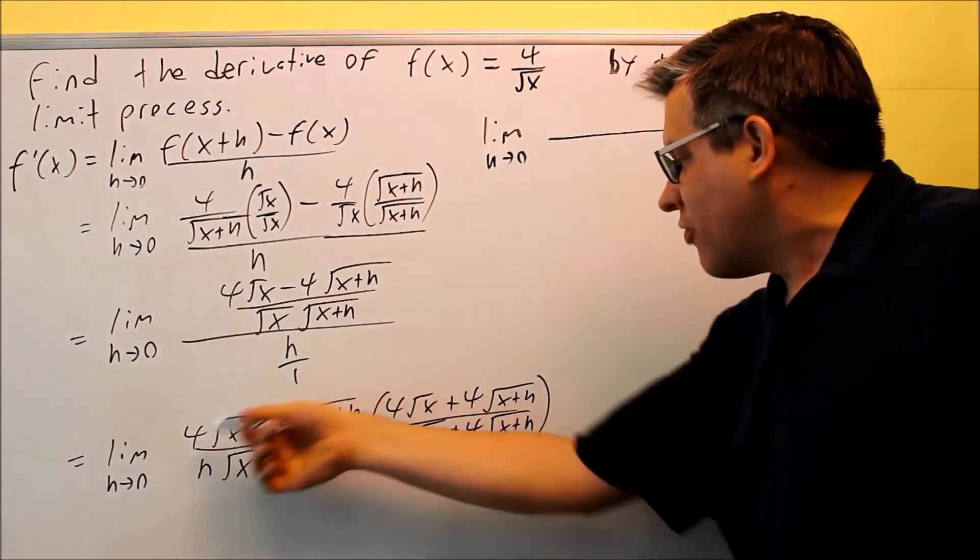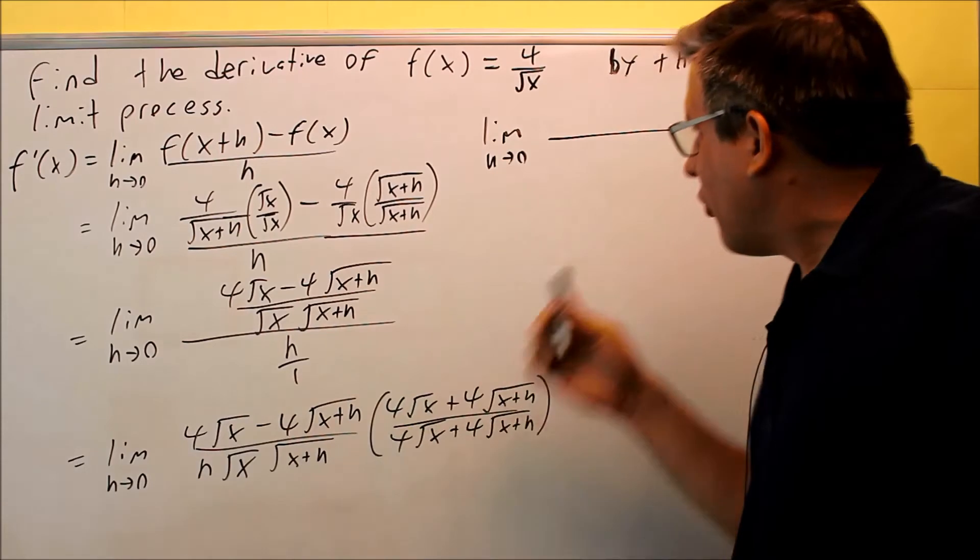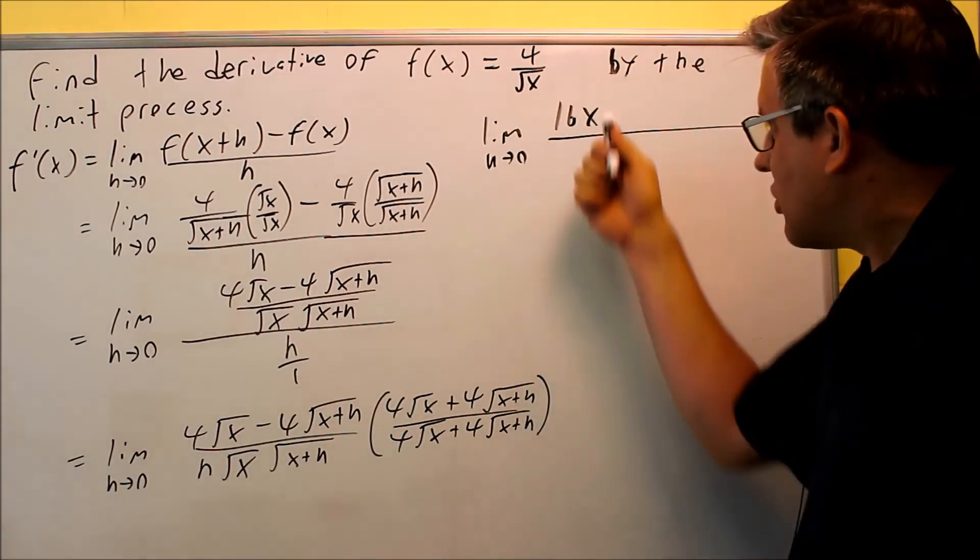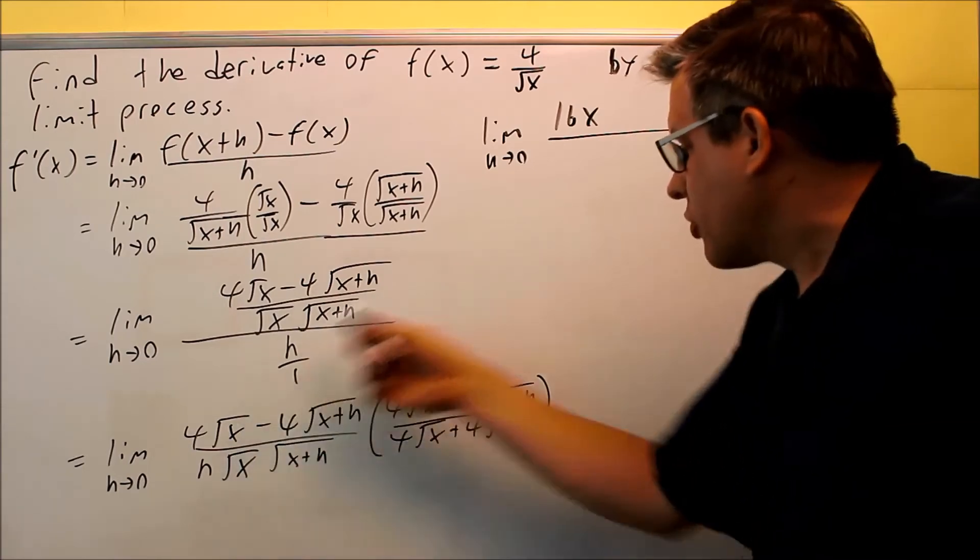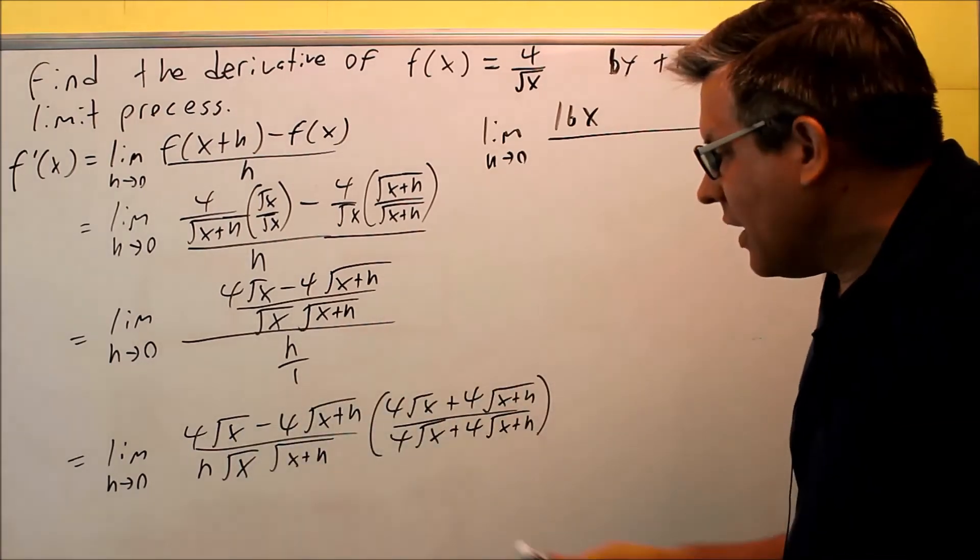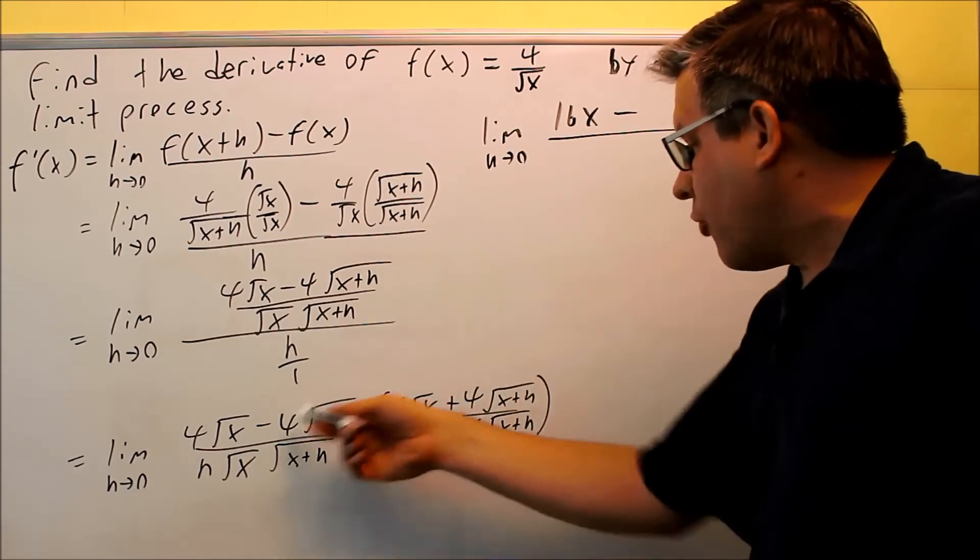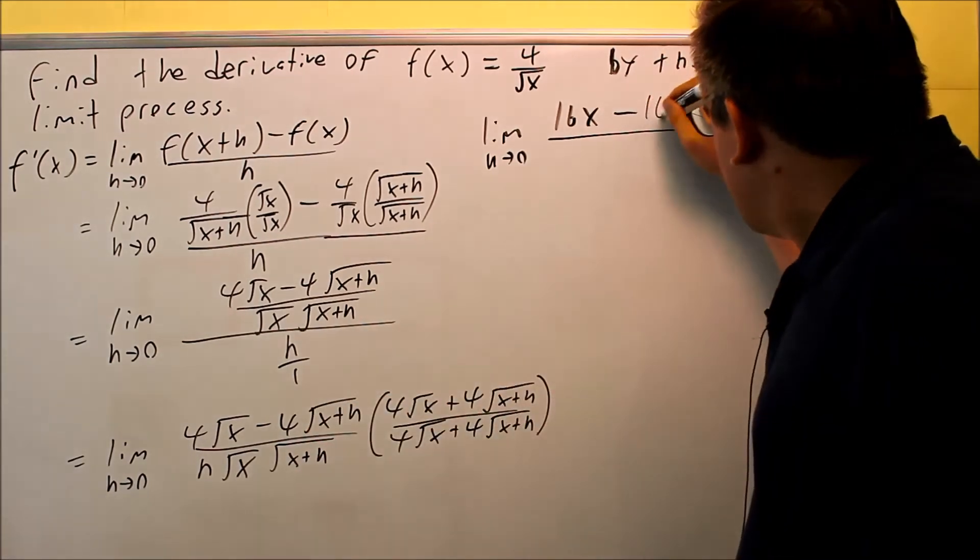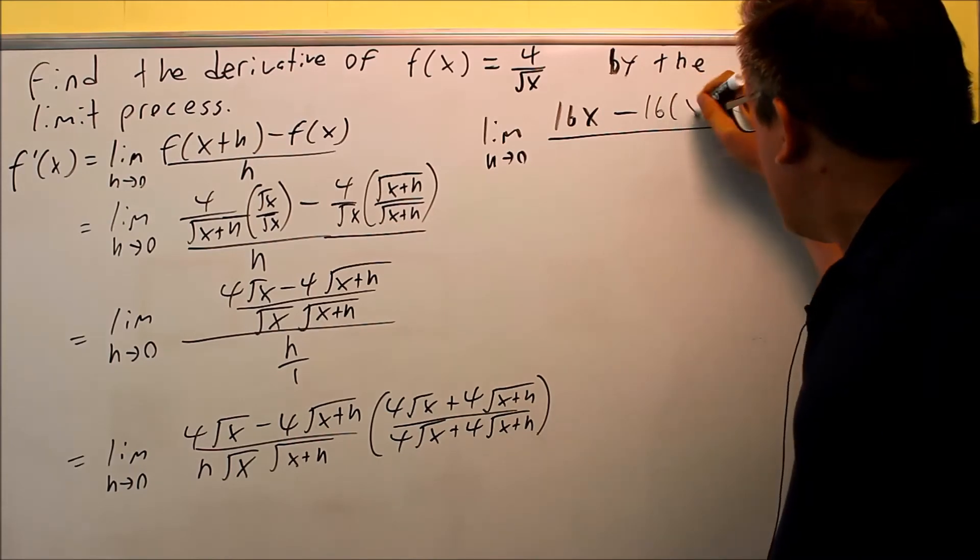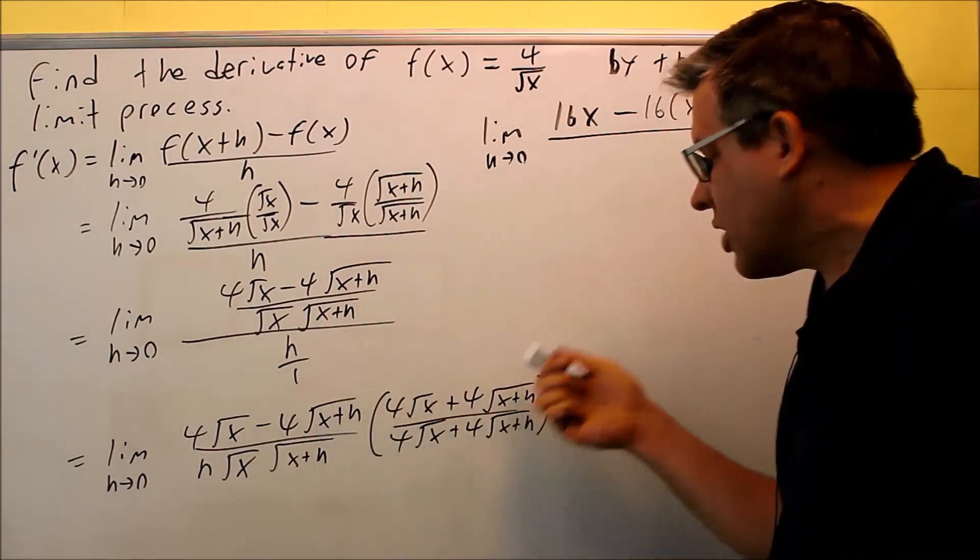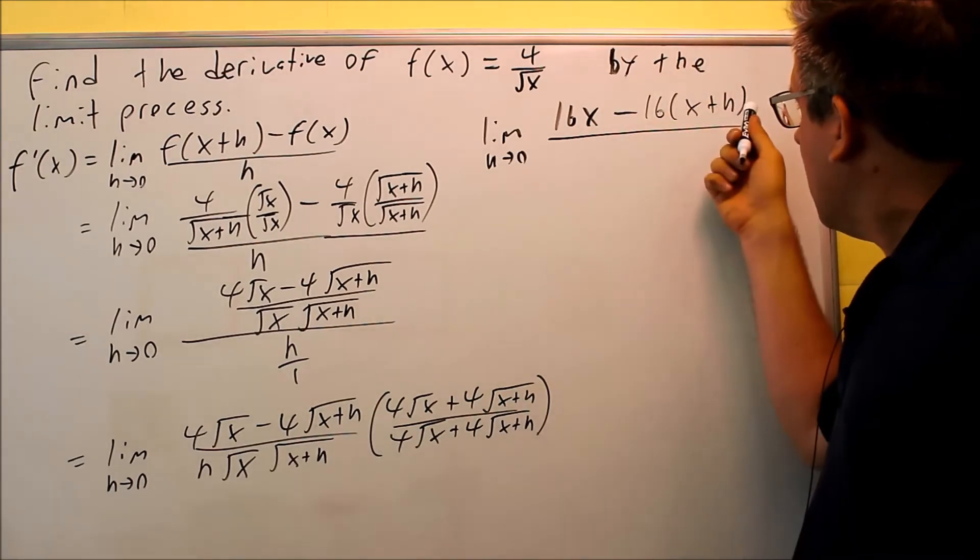When we multiply these first two, you're going to get 4 times 4 is 16, square root of x, square root of x gives you just x. The middle terms are going to cancel. I have a minus and then what happens, I'm going to multiply these two together. I get 4 times 4 is 16, but then that's multiplied by just x+h because the square roots again are going to cancel out when you do that.